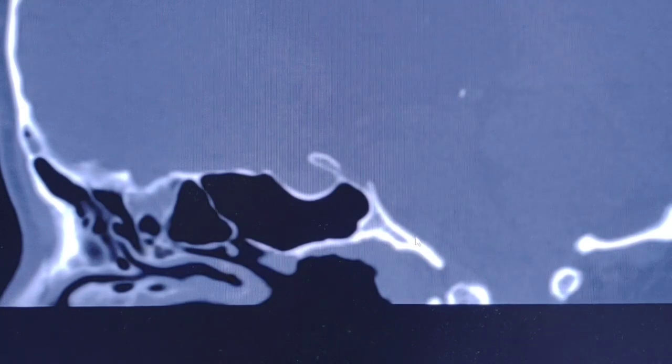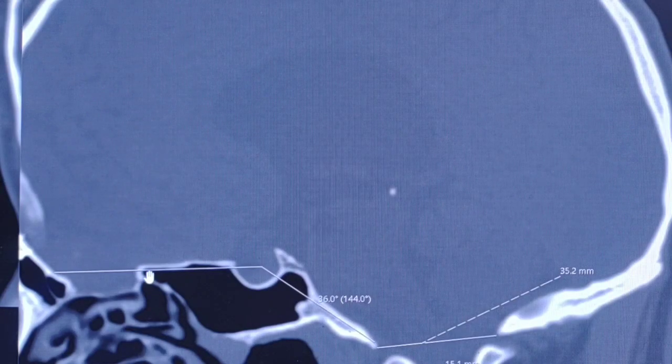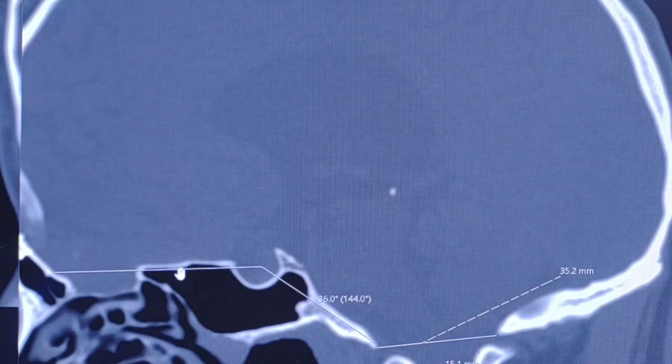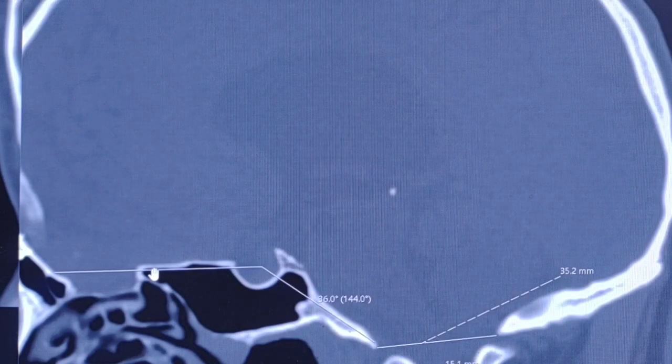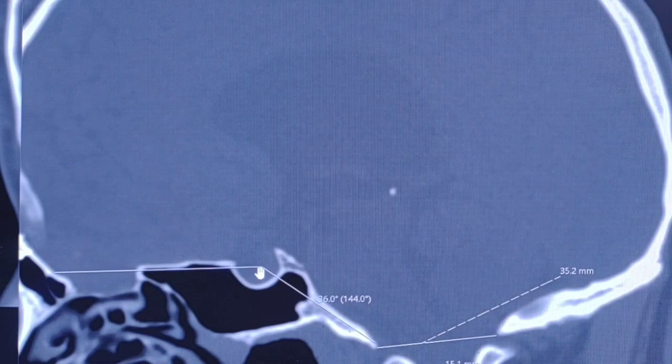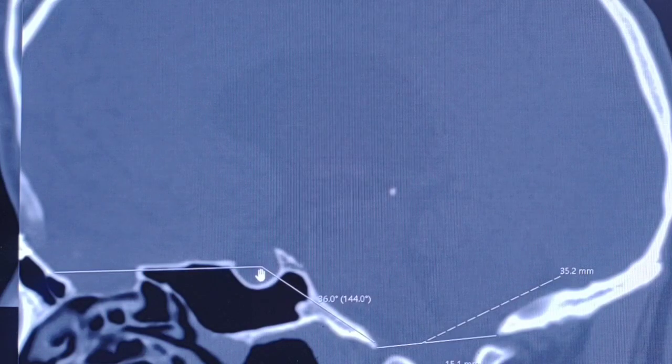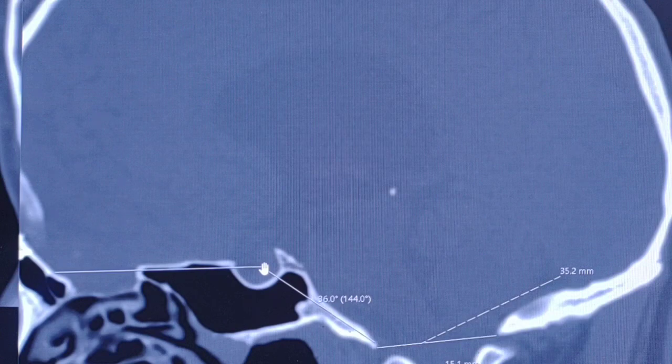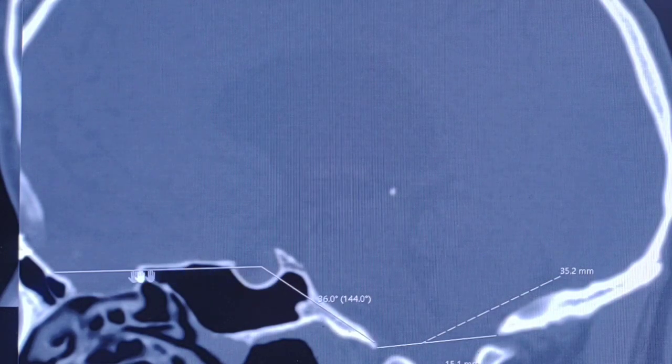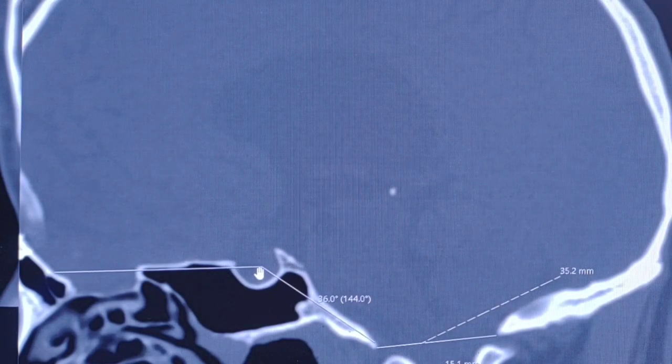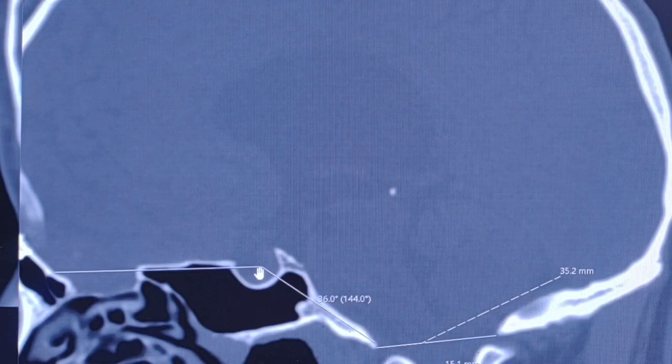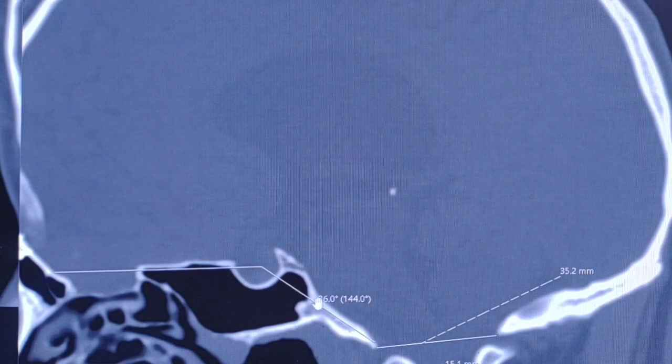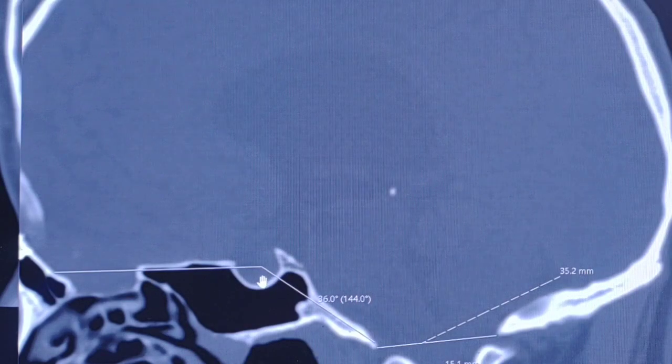So platybasia is the abnormal flattening of the skull base. How we measure it, I will show you right away. We try to find the angle formed by a line passing parallel to the floor of the anterior cranial fossa and the line joining the center of the pituitary fossa up to the anterior border of the foramen magnum here. This angle should normally be between 125 to 143 degrees. In this case, it's 144 degrees. So this is platybasia, abnormal flattening of the skull base.